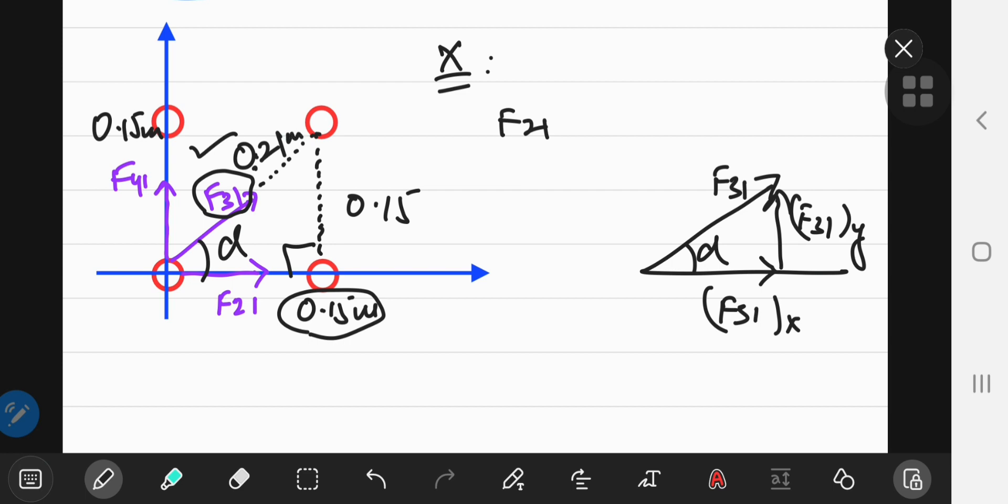If you want the horizontal component, we see the horizontal component is the base of this triangle. And what trigonometric ratio do you need when you want the base of a triangle? Well, you just need the cosine ratio. So cosine of alpha equals F sub 3, 1 sub x divided by F sub 3, 1.